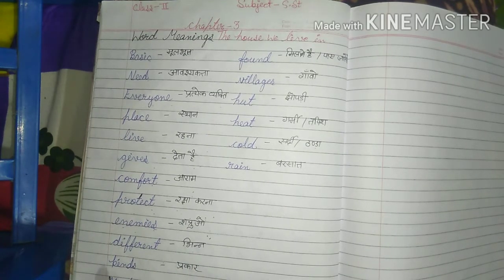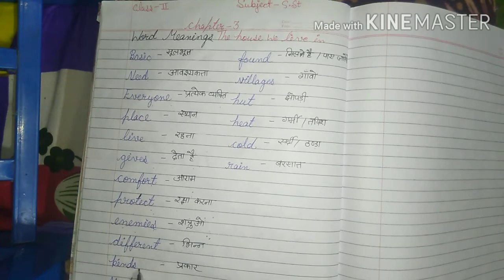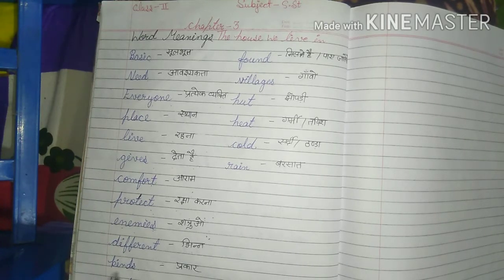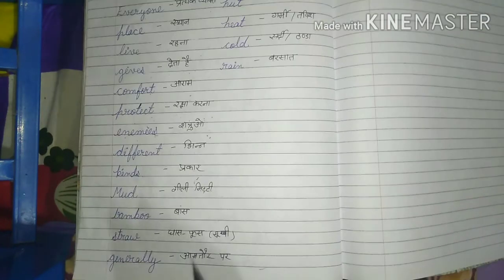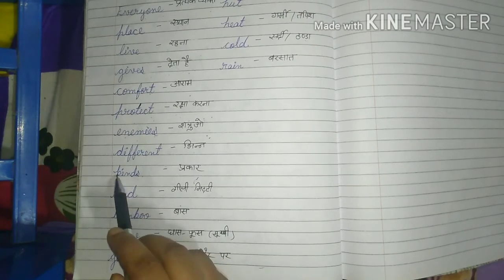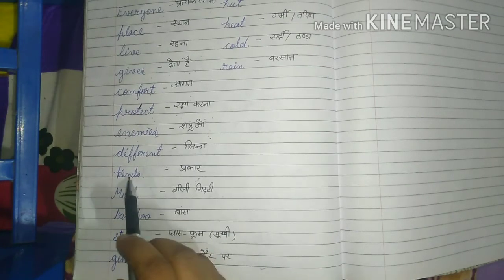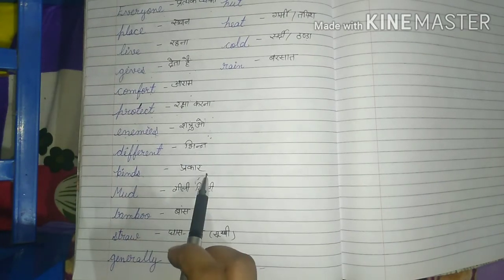Next: KINDS — K-I-N-D-S. Kinds means 'prakar' (types/kinds).